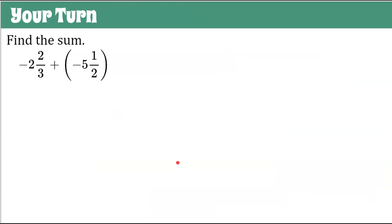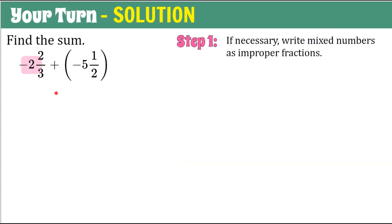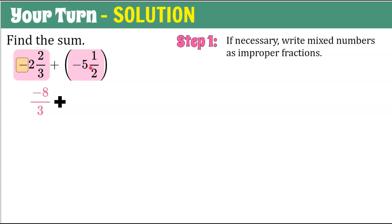Here's one more for you — pause the video, remember all four steps, come back and check your work. Welcome back. Step one: write mixed numbers as improper fractions. Both values are mixed numbers. Three times two is six, plus two is eight — so negative eight-thirds. We're going to add: two times five is ten, plus one is eleven, with the negative sign in the numerator — so negative eleven over two.